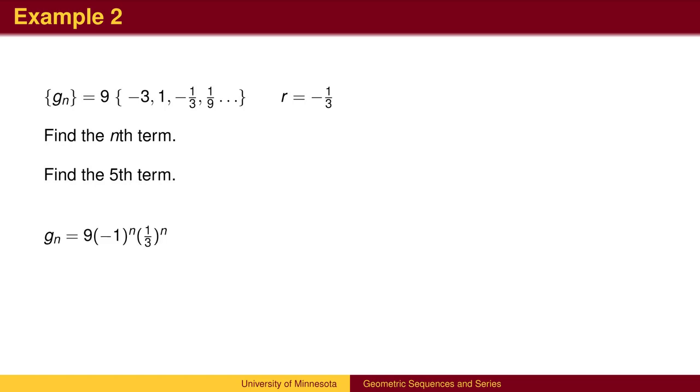We can separate the common ratio into two components. The negative 1 to the n makes the sequence alternate, and the 1 third to the n makes the sequence shrink from the starting value of 9. We can find the 5th term by plugging 5 into the formula. We could also have multiplied the 4th term by negative 1 third.